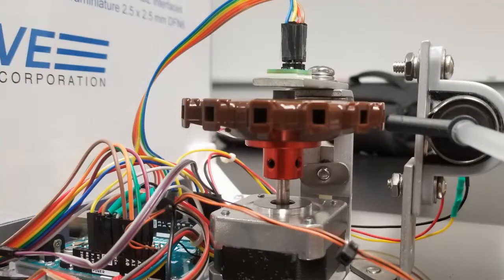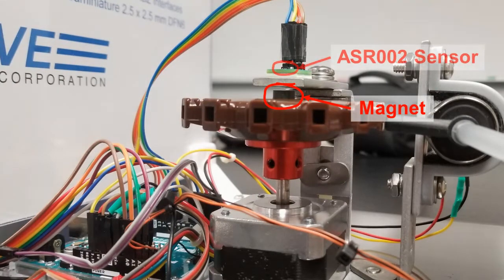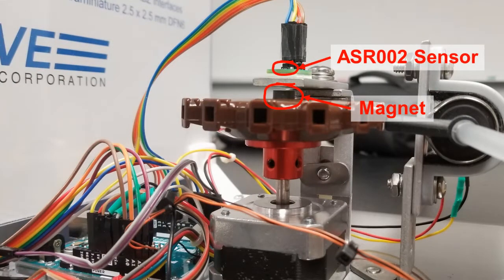Here's a side view. There's a magnet glued to the pitch pipe, and the ASR002 detects the rotating magnetic field.